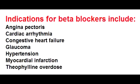Describe the effects of beta blockers in angina pectoris. Beta blockers decrease heart rate and contractility, resulting in decreased oxygen consumption, which is beneficial in angina pectoris. In myocardial infarction, beta blockers decrease mortality.